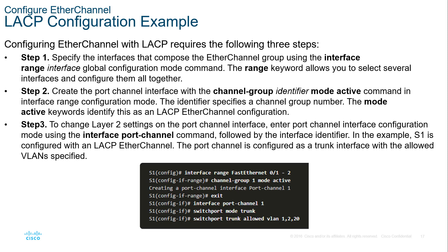Here is how we configure LACP. You need to do this either as a range or go to both interfaces. You set the channel group, the number of the group, and the mode — here we are setting the mode to active. Once we set the channel group, that becomes the interface. For example, channel group 1 becomes port channel 1 — that's how we reference that EtherChannel. We can then set it to trunk mode and allow all VLANs to operate on that trunk. If this were channel group 10, we'd reference it as port channel 10.